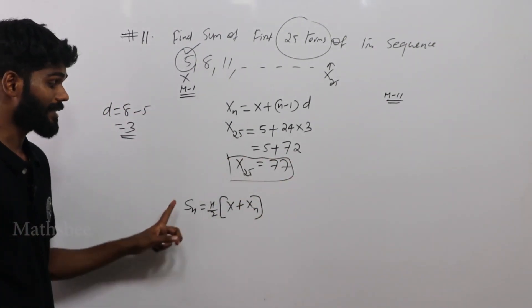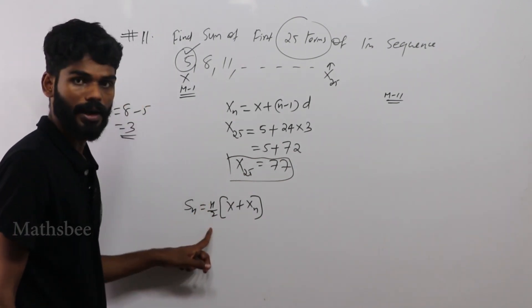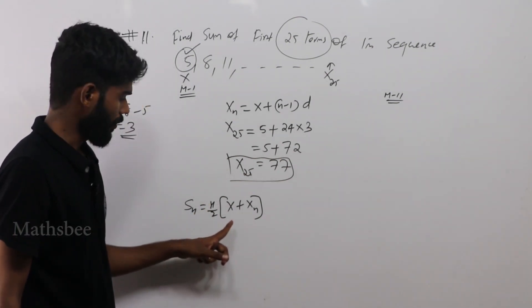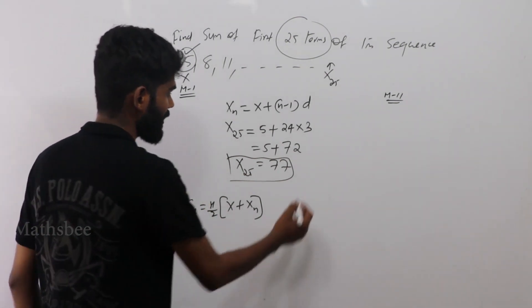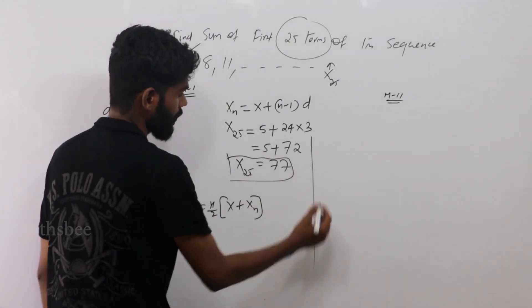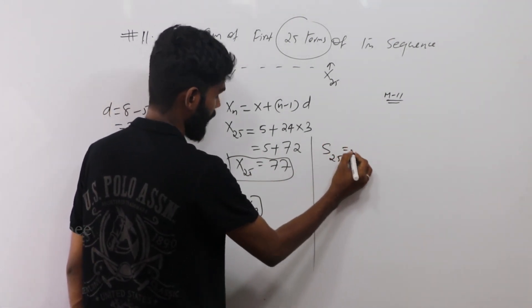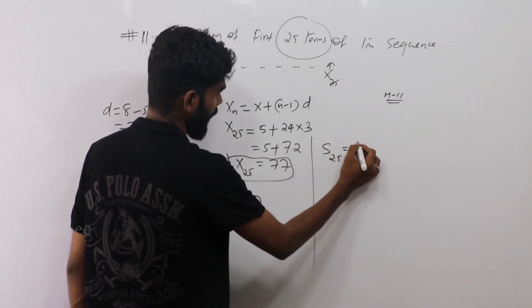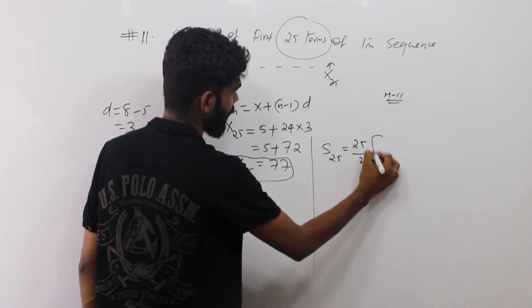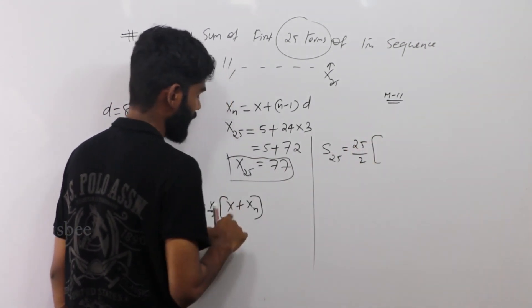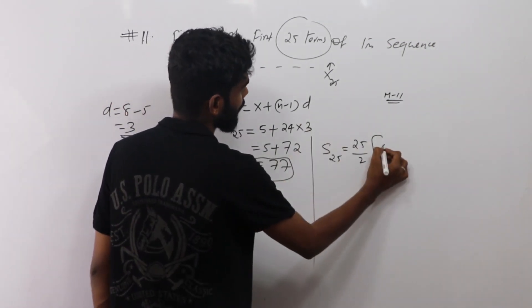Now, the sum formula is: S = n/2 × (x + xn). That result is equal to n/2, which is 25 by 2. The first term x is 5.